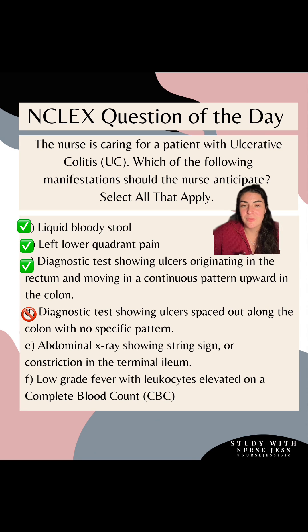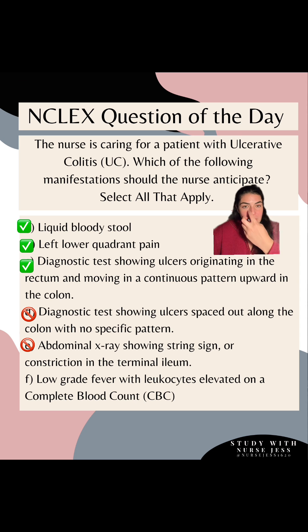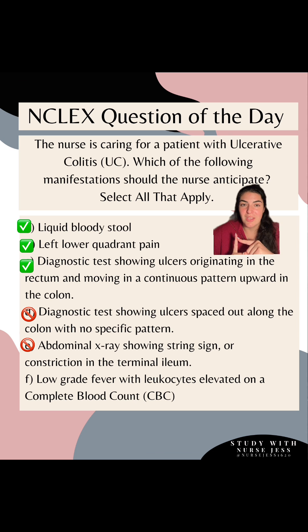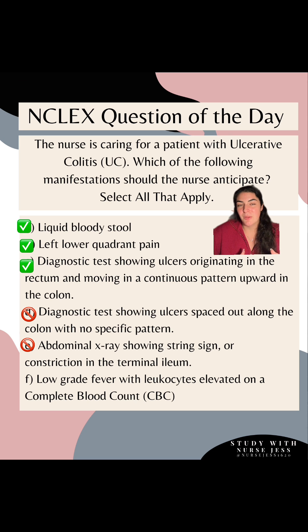Option E: abdominal x-rays showing string sign or constriction in the terminal ileum — this is incorrect for UC; it is specific for Crohn's. Crohn's is patchy throughout the colon and typically originates in the terminal ileum. The ileum is the distal part of the small intestines that connects to the ascending colon. Review your anatomy if needed. The terminal ileum's connection to the ascending colon is on our right side, so these patients typically present with right lower quadrant pain.